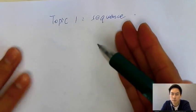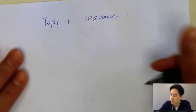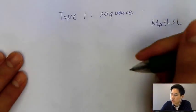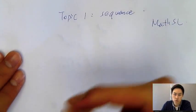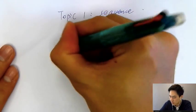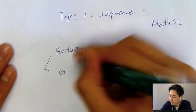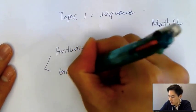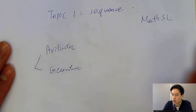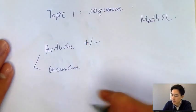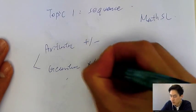This is a common topic in IB exam for Math SL. You need to know two things about sequences: arithmetic sequence and geometric sequence. What is it all about? In simple words, arithmetic is all about plus or minus, and geometric is all about times or divide.